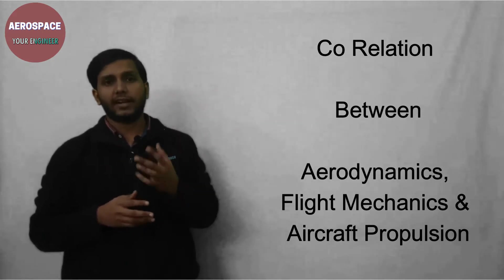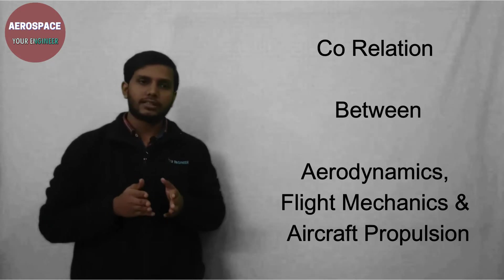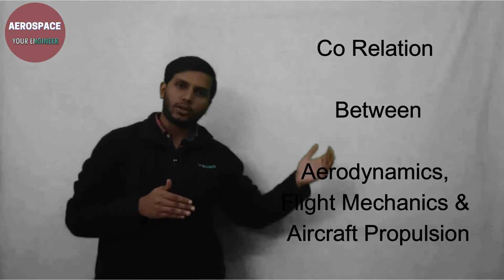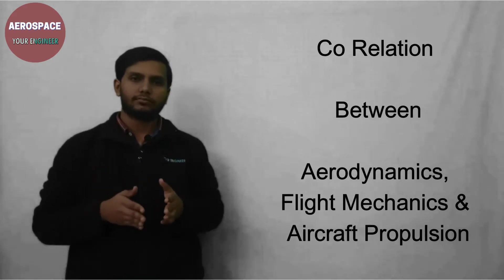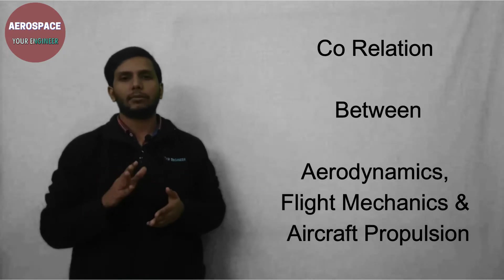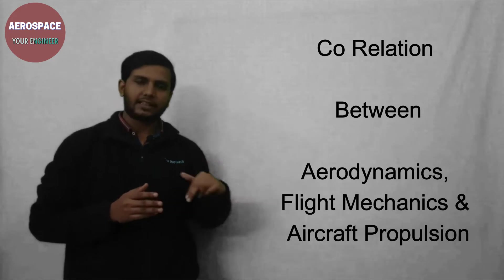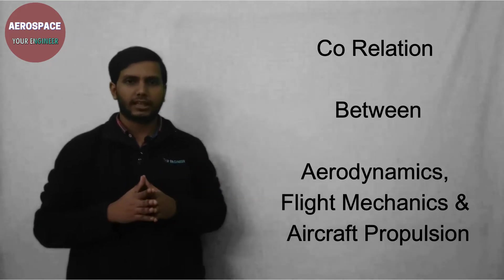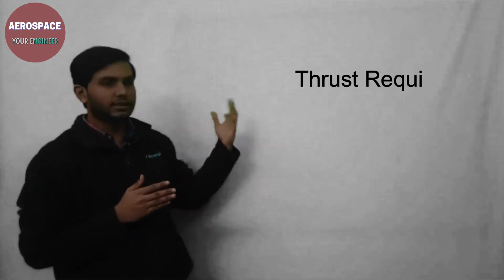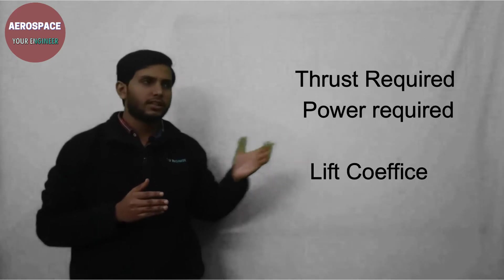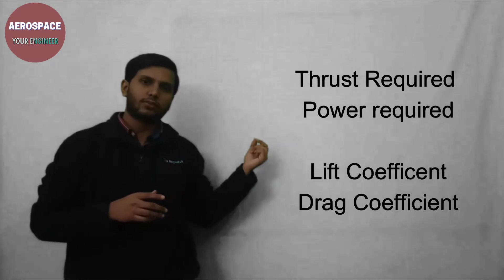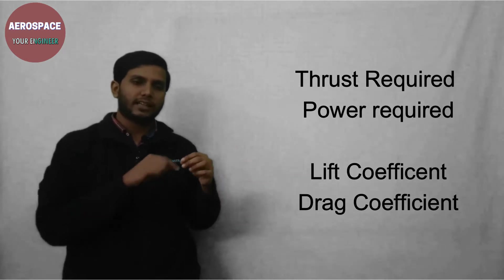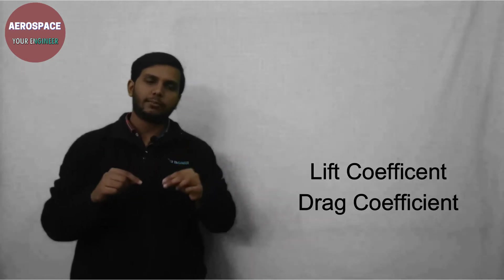In flight dynamics, when you calculate range and endurance, you consider the specific fuel consumption of that aircraft — that is a propulsion parameter. When you calculate thrust required and power required by an aircraft, lift coefficient (CL) and drag coefficient (CD) from aerodynamics are used. So aircraft propulsion, aerodynamics, and flight mechanics are all three correlated.